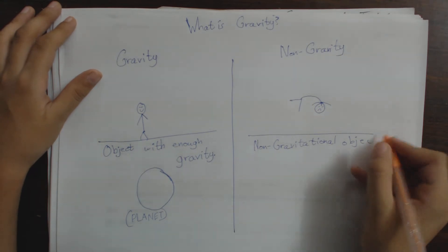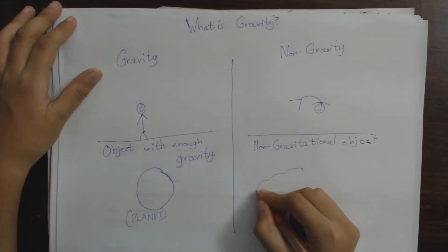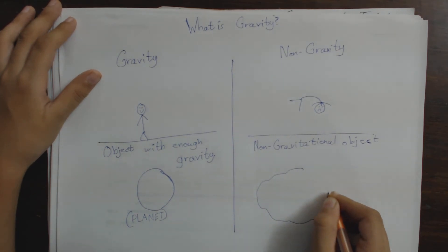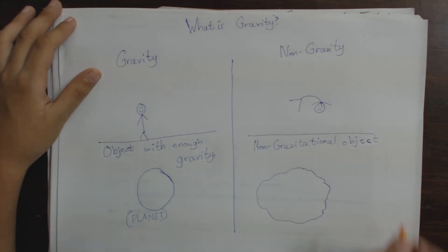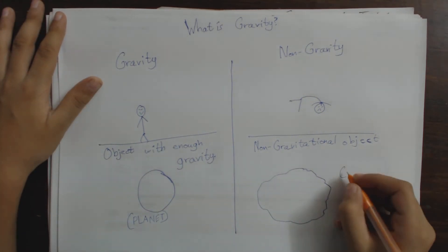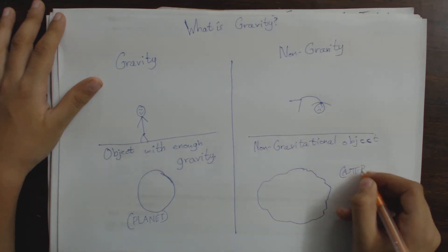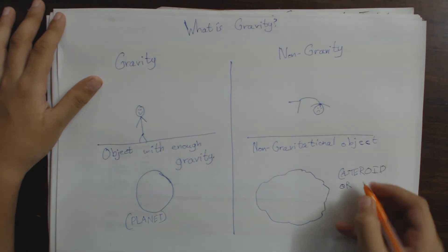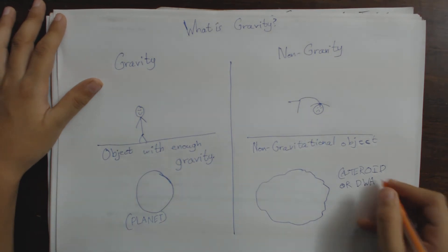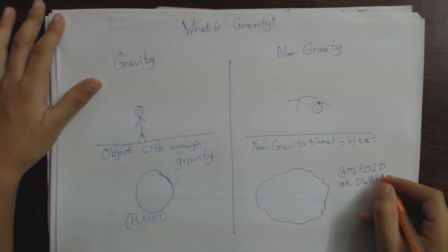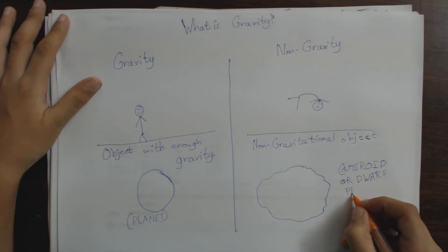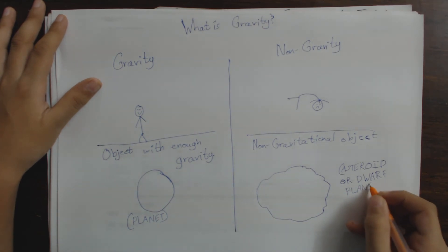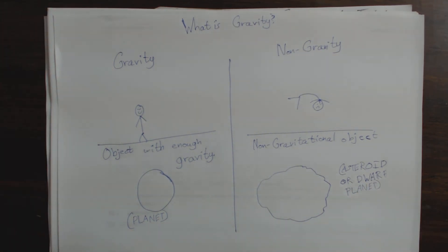And then here is a non-gravitational object. Of course, everyone knows what will happen if there's no gravity on a space object - it is irregular, and so it is known as an asteroid or dwarf planet. That's it.